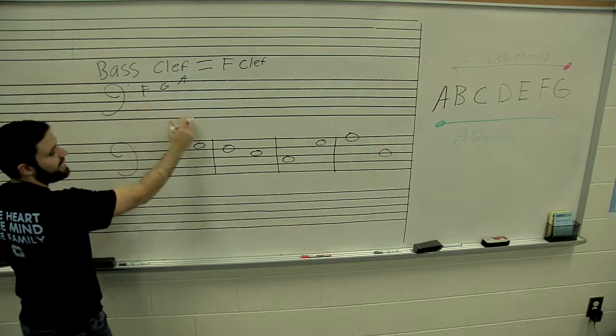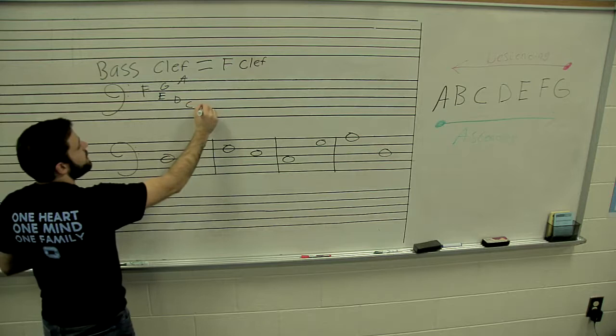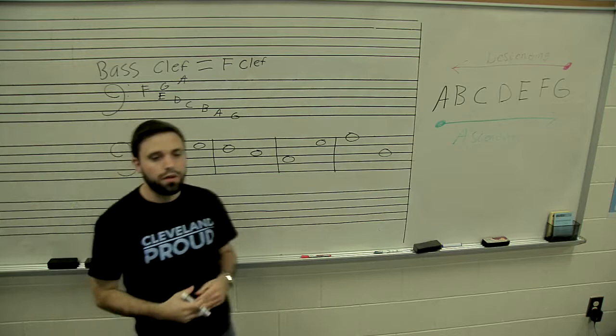On the opposite way, we're descending now. So you have E, D, C, B, A, and then G.